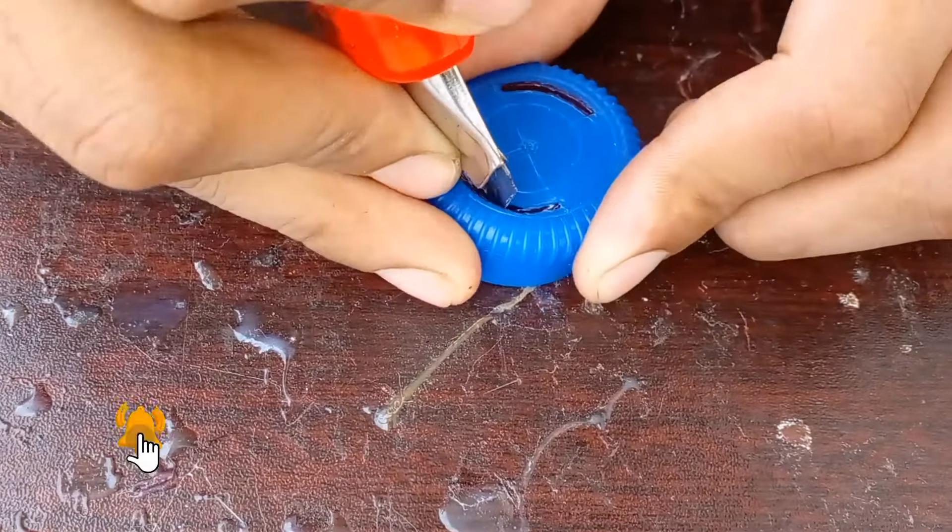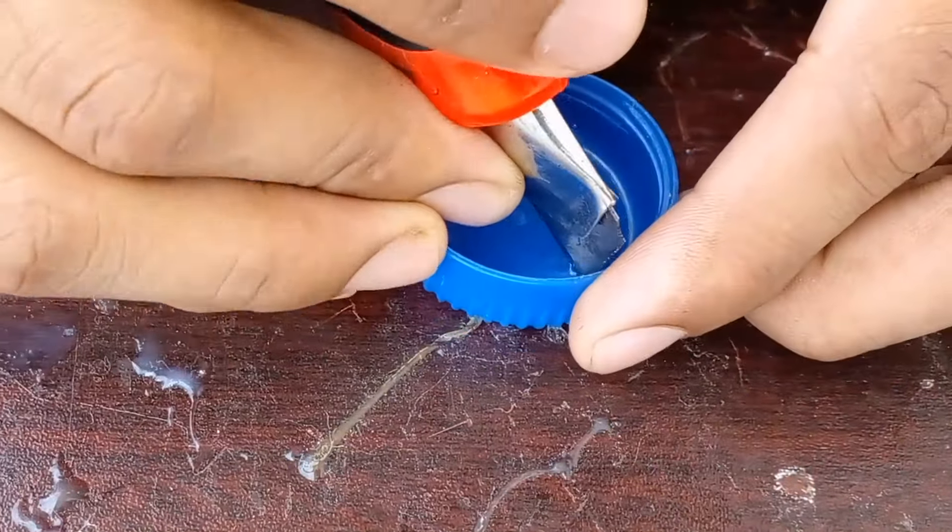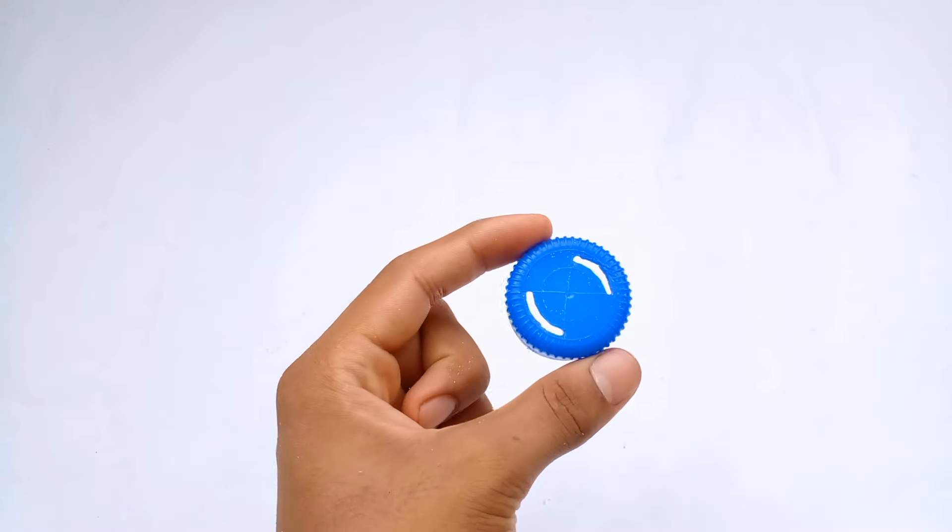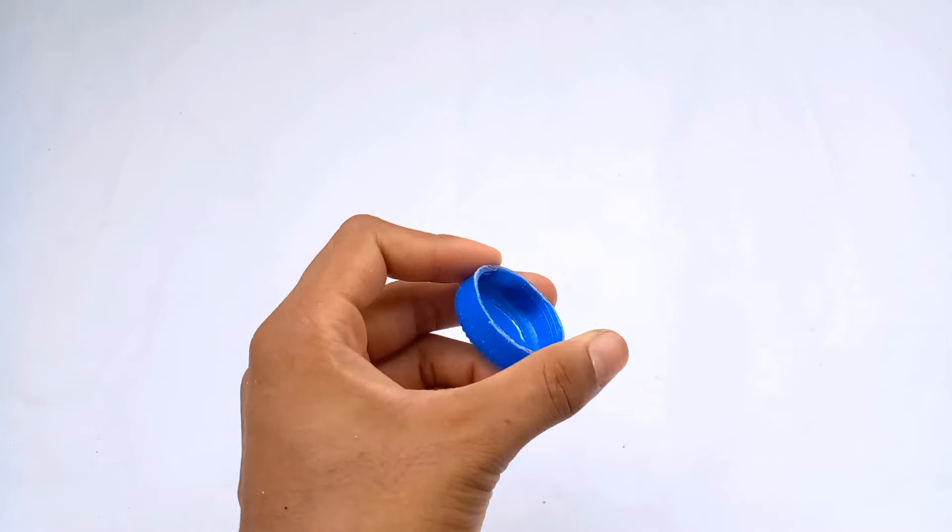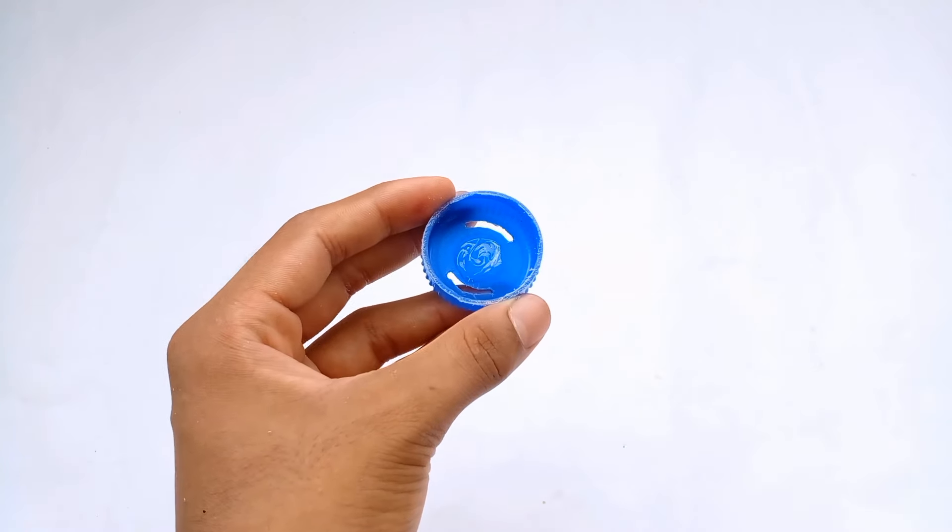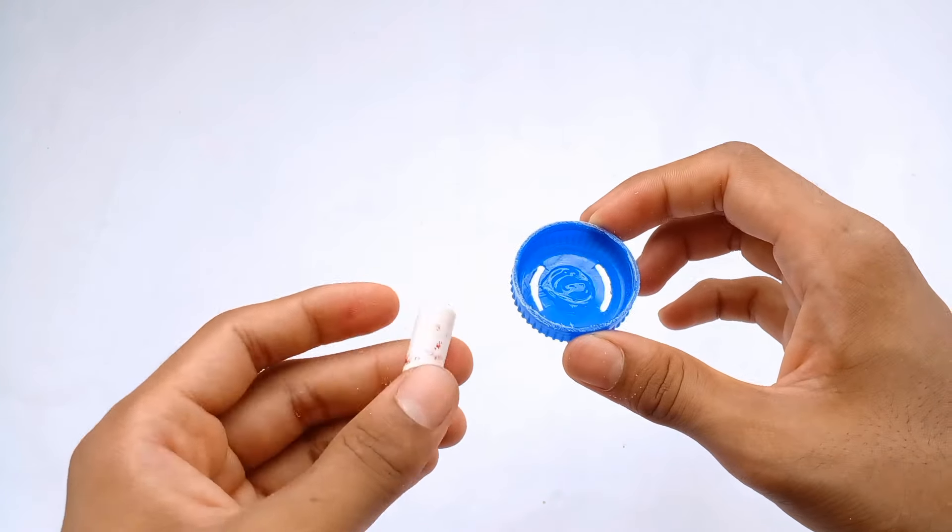Now take a pen cap and cut it in half, then stick it into the center of the bottle cap.